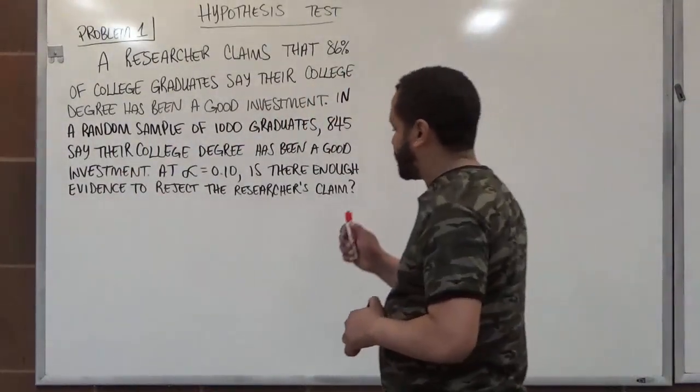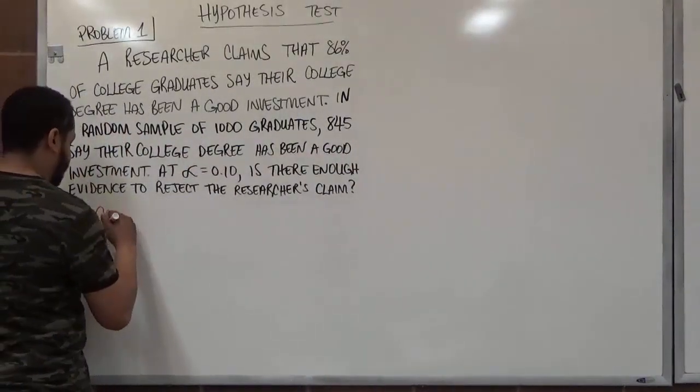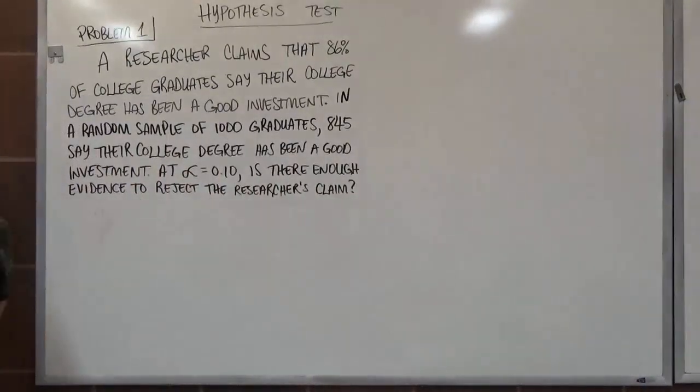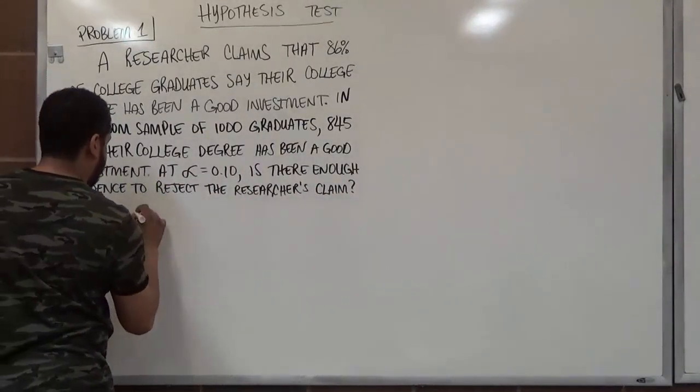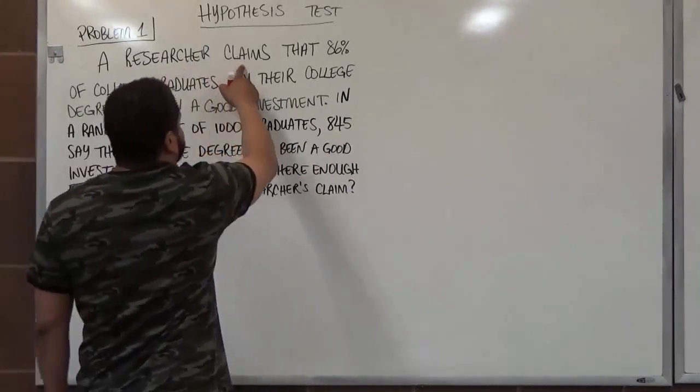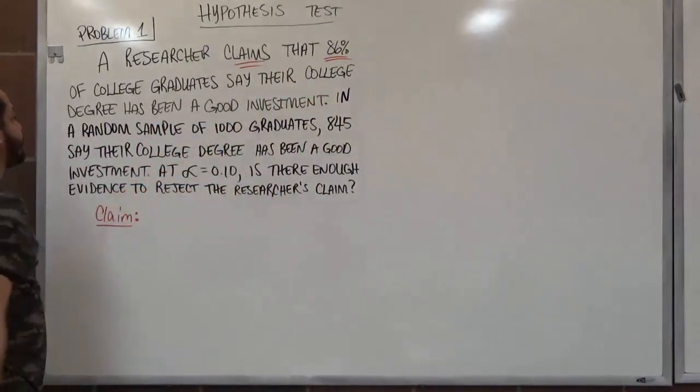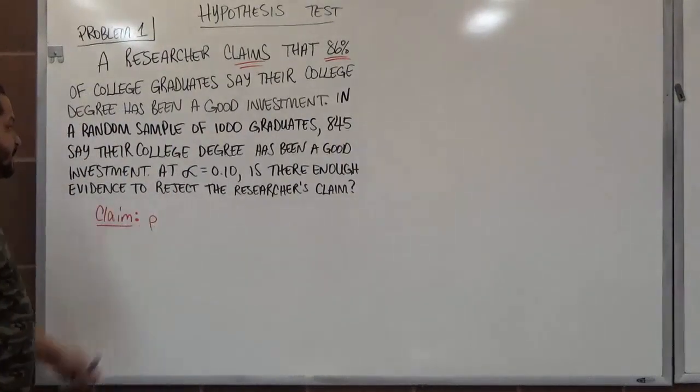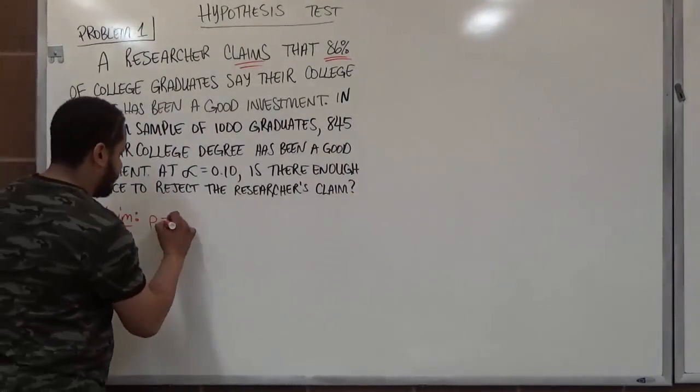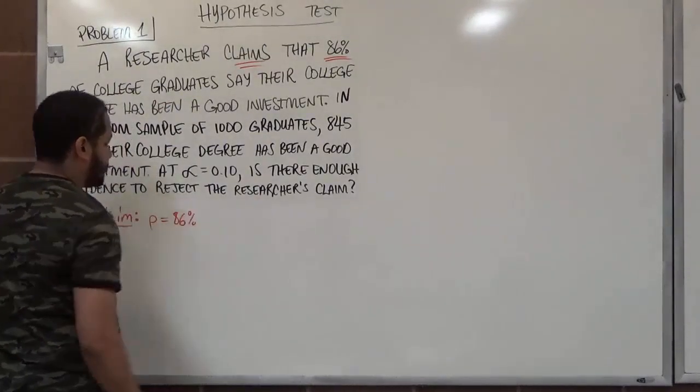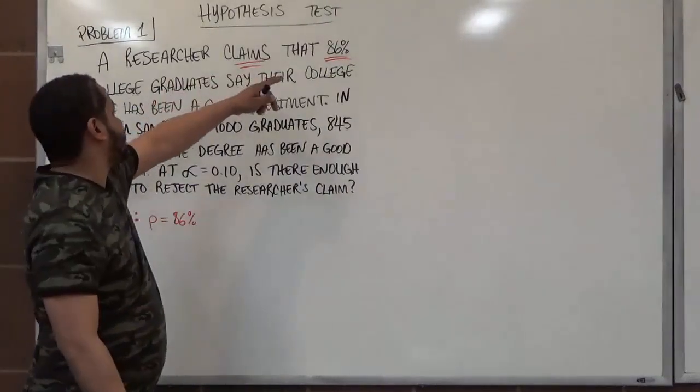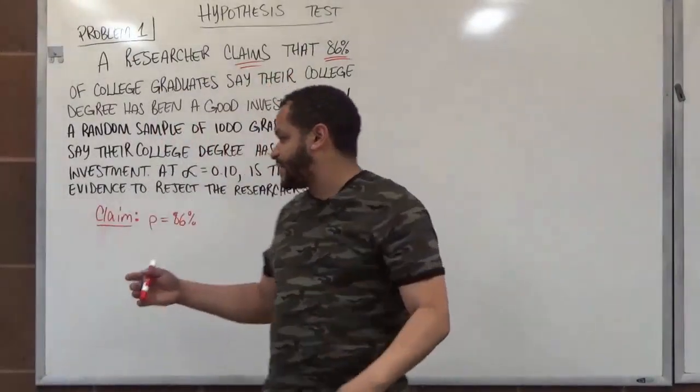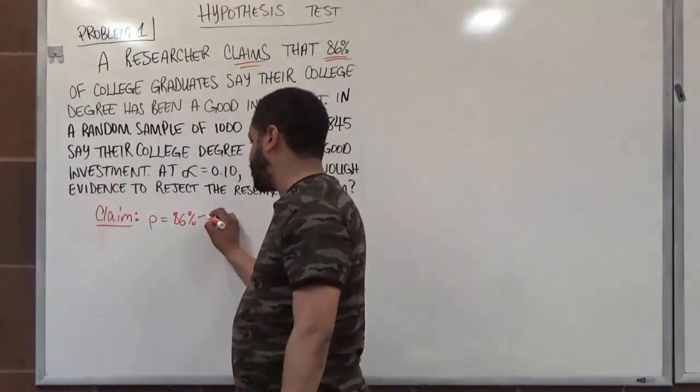We notice firstly, we have to identify our claim. So our first thing to do is identify the claim. We see here a researcher claims that 86% of college graduates say their college degree has been a good investment. And that percentage is going to be represented by the P. P stands for the proportion, which is a percentage usually. And this is going to be 86%. The reason why this has equality is because they claim that 86% of college graduates say their college degree has been a good investment. This is specifically for 86%. So we set the claim equal to 86%, which turns out to be 0.86.